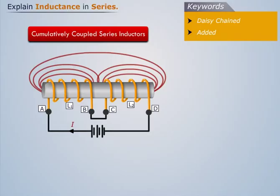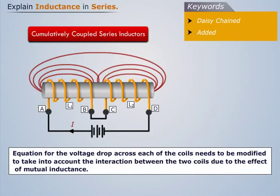If the current flowing between the points A and D through the two cumulatively coupled coils is in the same direction, then the equation for the voltage drop across each of the coils needs to be modified to take into account the interaction between the two coils due to the effect of mutual inductance. The self-inductance of each individual coil, L1 and L2, will be the same as before, but M, which denotes the mutual inductance, will be added.